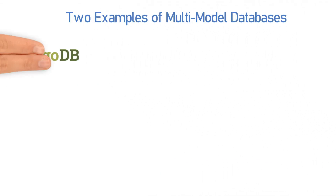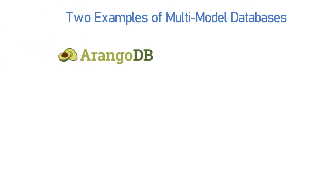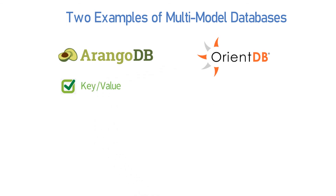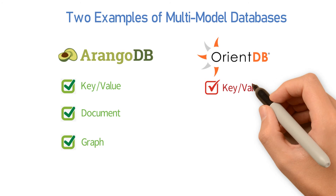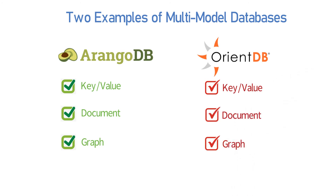Now I will introduce two examples of multi-model databases: ArangoDB and OrientDB. ArangoDB is a multi-model database supporting key-value, document, and graph models. OrientDB is another multi-model database that supports key-value, document, graph, and object models.